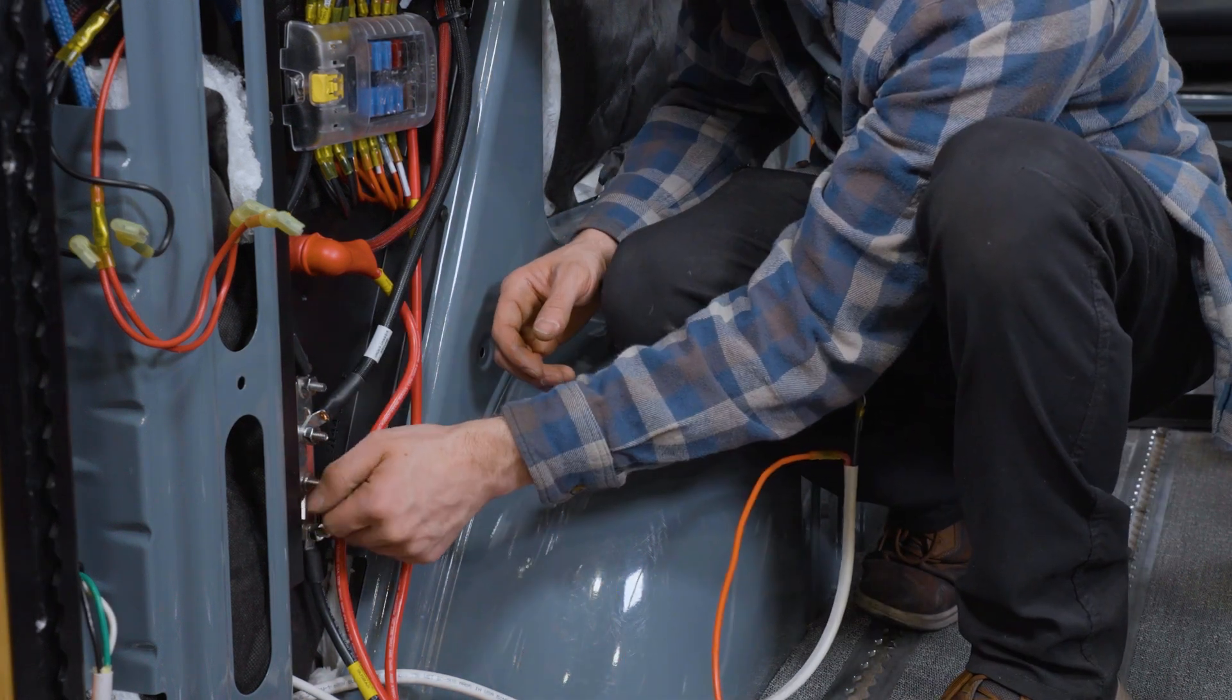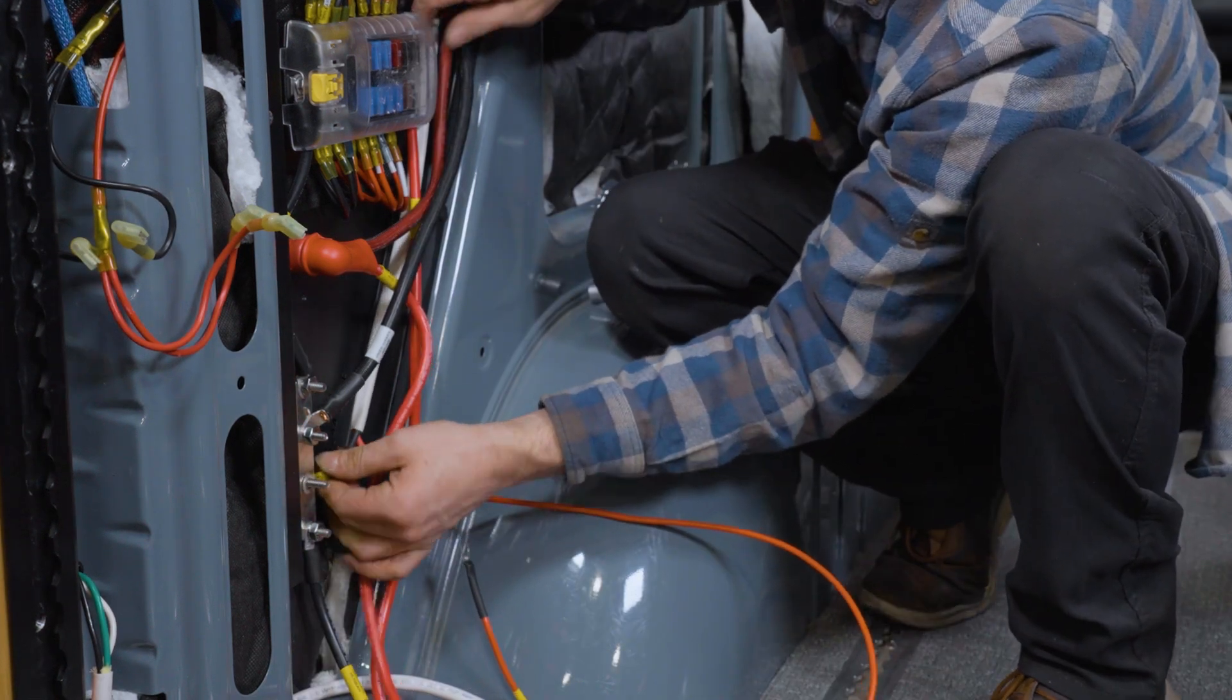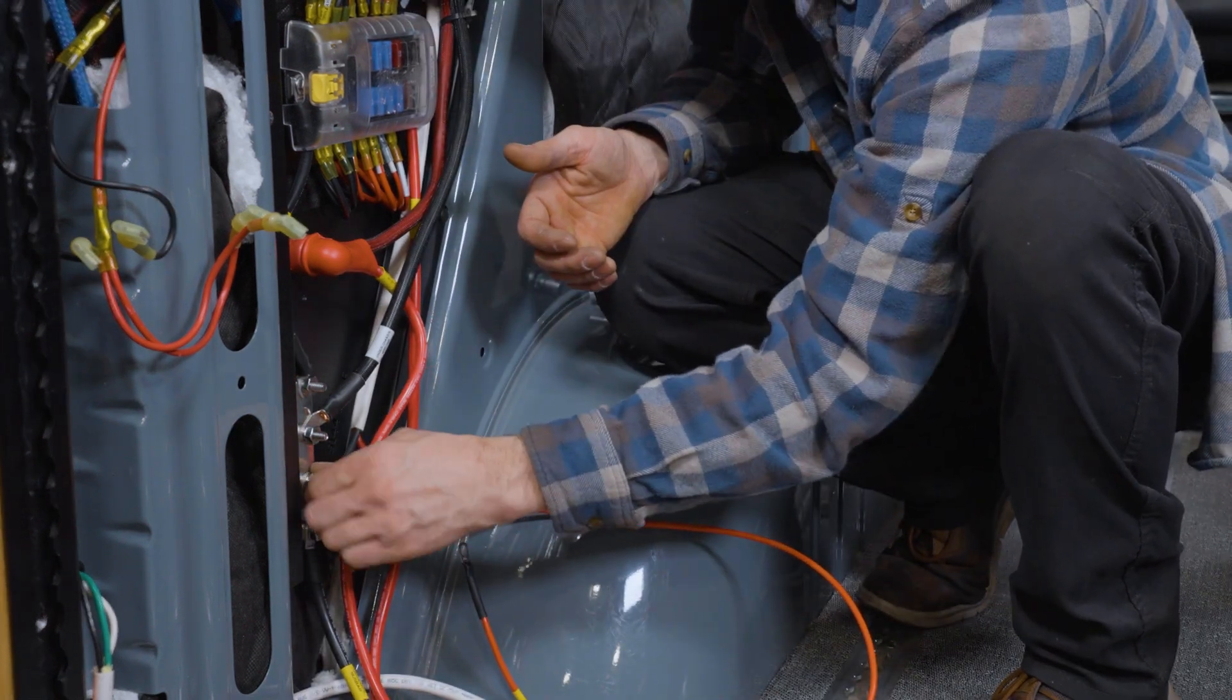And we're just going to connect it to the negative bus bar on the fuse block plate inside the wall. The negative cable is going to get grounded right here on the negative bus bar inside the wall. And as soon as that's tightened up, you can just replace the cover over that bus bar.